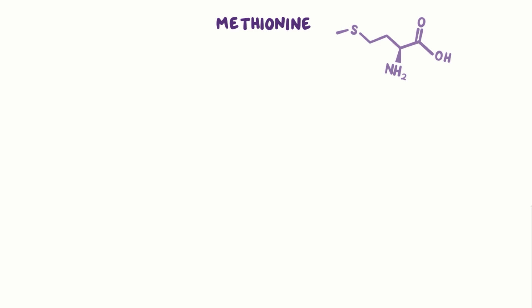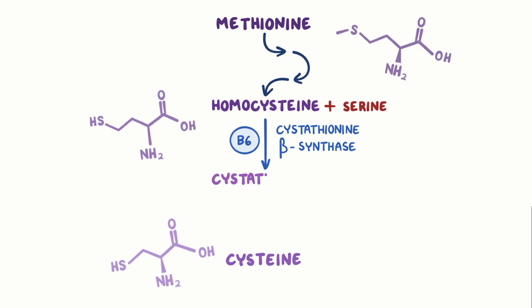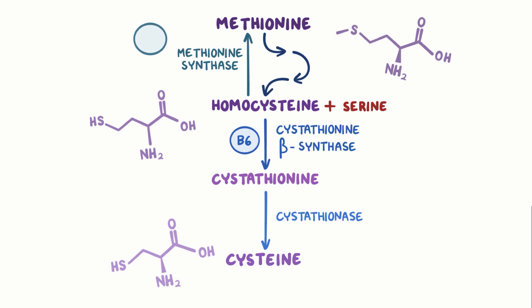Methionine is also used to synthesize another amino acid, cysteine. First, methionine is converted into the amino acid homocysteine through multiple steps. Next, the enzyme cystathionine beta synthase, which requires vitamin B6 as a substrate, combines homocysteine and serine to create cystathionine. Finally, the enzyme cystathionase converts cystathionine into cysteine. Any homocysteine that does not undergo this process can be converted back into methionine by methionine synthase, which requires vitamin B12 (cobalamin) and folate as substrates.